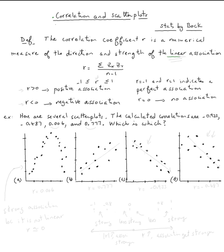Remember, it has to be linear, cannot be curved. R equals the sum of the z-scores of x times z-scores of y divided by n minus 1.